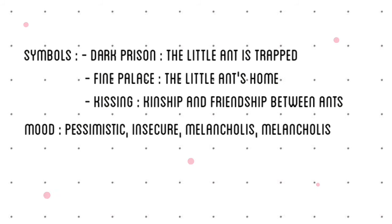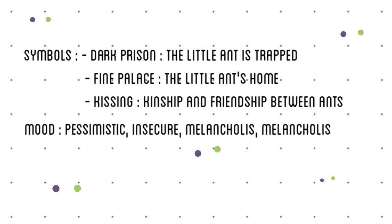Fourth is kissing — it symbolizes friendship, fellowship, and intimacy. In this story it symbolizes friendship and kinship between the ants. Moving to mood: first, we have pessimistic — this mood happens when the little ant feels hopeless and thinks he will die. Second is insecure — this mood happens when the little ant is under the thimble.